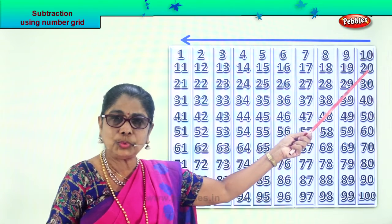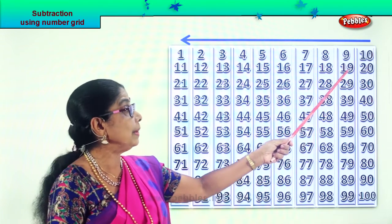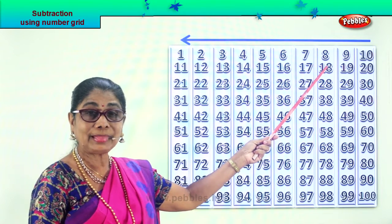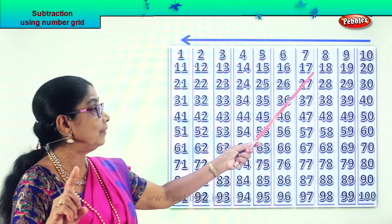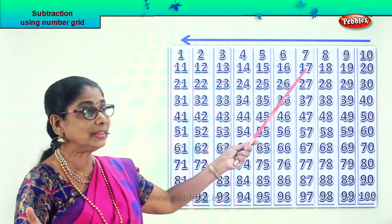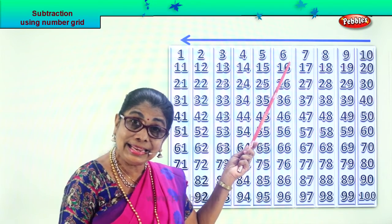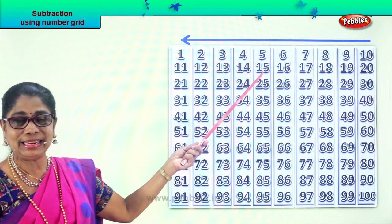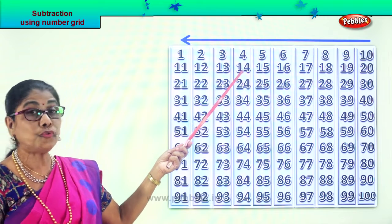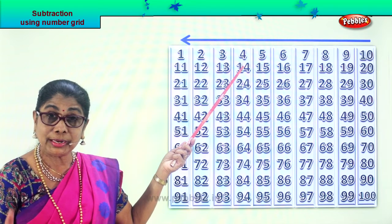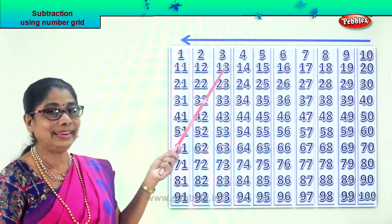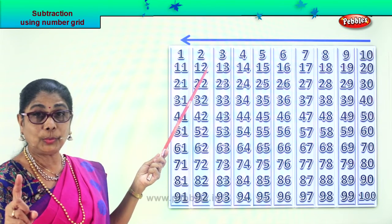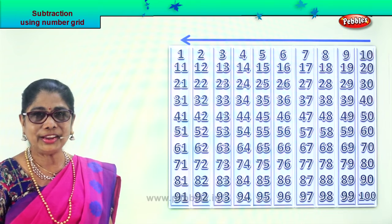Look at this — 20. From 20 take away 1 — 19. 19 take away 1 — 18. 18 take away 1 — 17. 17 take away 1 — 16. 16 take away 1 — 15. 15 take away 1 — 14. 14 take away 1 — 13. 13 take away 1 — 12. 12 take away 1 — 11. Very good!